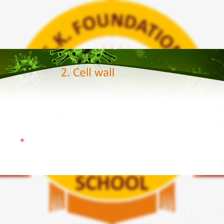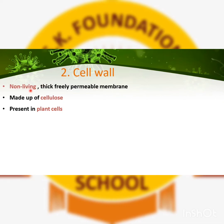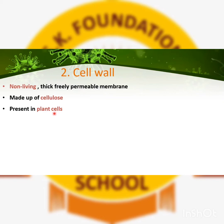Now we will learn the second part: cell wall. Cell membrane and cell wall are not the same thing. Cell wall is a nonliving part of the cell, whereas cell membrane was a living part. Cell wall is thick and freely permeable. Cell membrane is selectively permeable — it allows only some things in and out — but cell wall is freely permeable, allowing all molecules to enter and exit. Cell wall is made up of cellulose, and it is only present in plant cells; it is absent in animal cells.